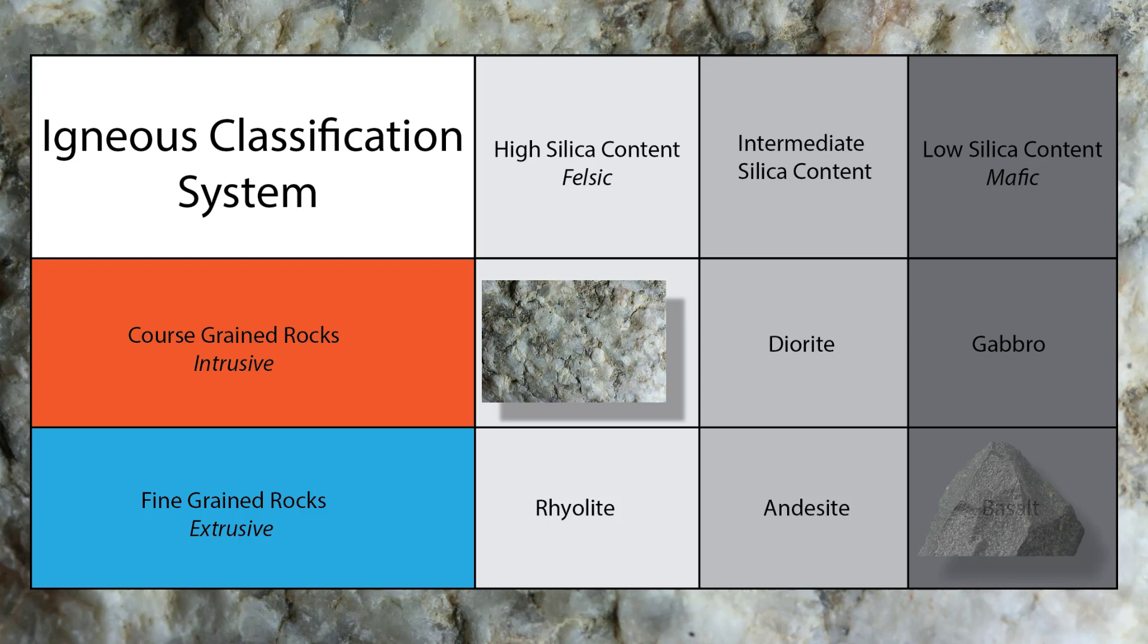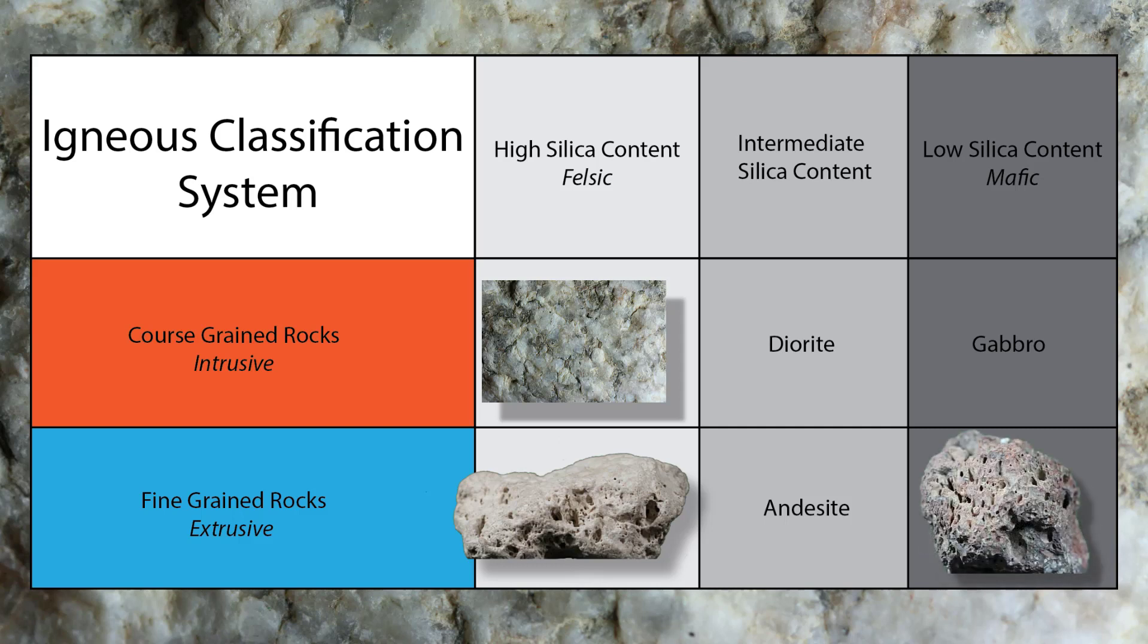The pumice we looked at is very similar to a rock called rhyolite, and so goes in the table here. Scoria, on the other hand, is more like basalt because its silica content is lower, and so goes over here. Now, given what we've looked at so far, you should be able to figure out what these other three kinds of igneous rocks that go here might look like. Now, in the next video, we're going to take a look at sedimentary rocks. Okay, so it's time now for our creation fact of the week.